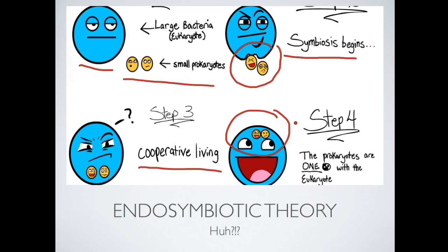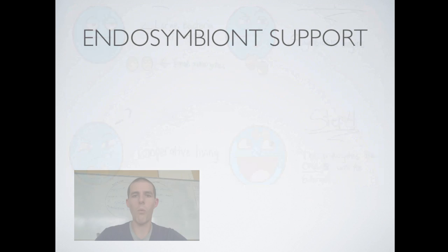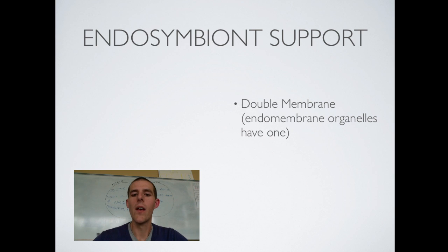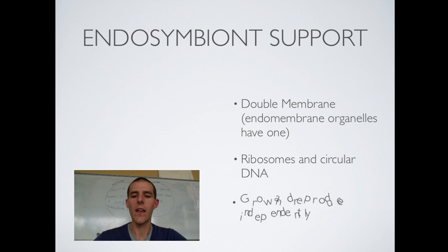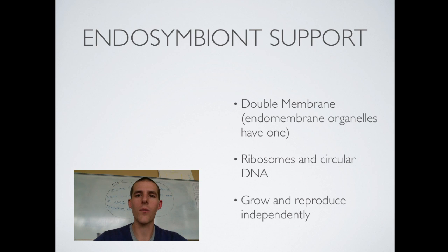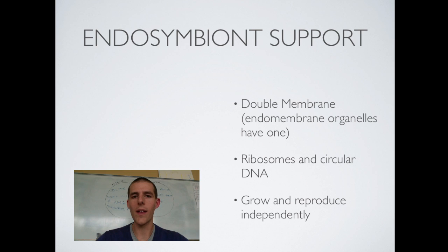This theory is pretty well accepted for several reasons. Here are some points used to support the endosymbiont theory. First, mitochondria and chloroplasts have a double membrane, while all other organelles we talked about in the endomembrane video have a single membrane. Also, chloroplasts and mitochondria have ribosomes and circular DNA, meaning they have their own genetic material separate from the rest of the cell. Finally, these organelles have the ability to grow and reproduce independently, while all other organelles rely on information from the cell's DNA. Take all that together and you have reasons why scientists believe mitochondria and chloroplasts might once have been freely living prokaryotes.